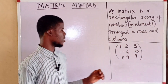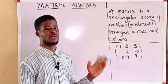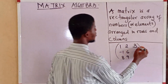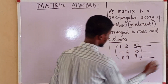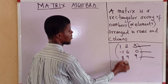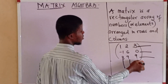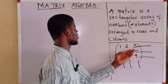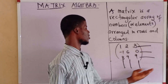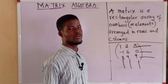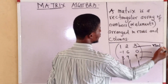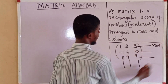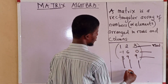In a matrix, we have the horizontal alignment and the vertical alignment. The horizontal are the rows. The vertical are the columns. So in this case, I have three rows and three columns.